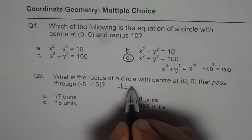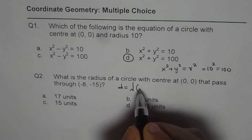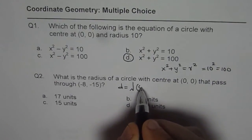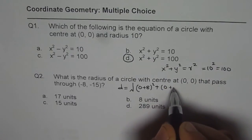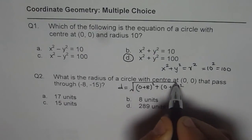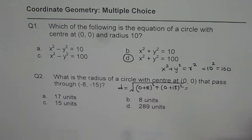So the distance D is square root of 0 minus 8, which is plus 8 whole square plus 0 minus 15, minus 15 makes it plus square root. So you can use the calculator, find your answer.